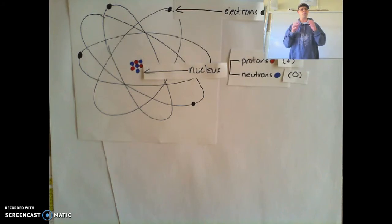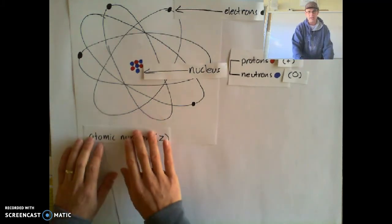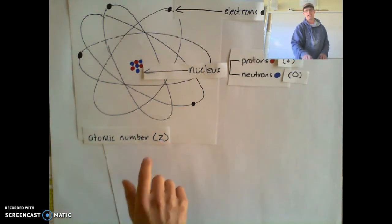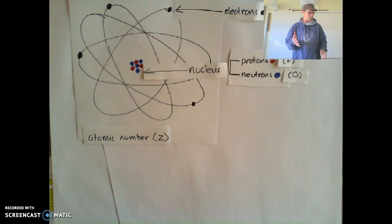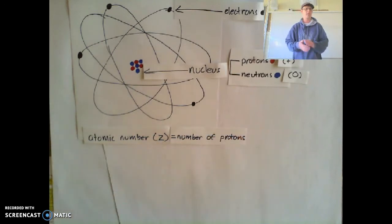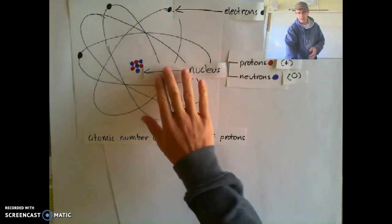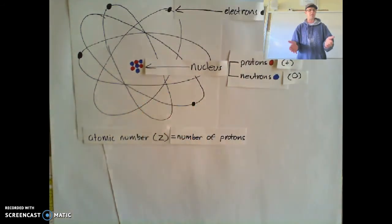The first and most important of these characteristics is the atomic number. The atomic number is represented by a capital Z. And what the atomic number is, is the number of protons in an atom. In this diagram you can see the nucleus, and the protons are being represented by the red dot. So if I want to find out what my atomic number is, I just need to count up the protons.